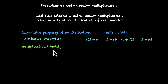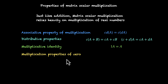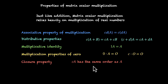Then you have multiplicative identity. This means that we always have a real number — a scalar — which we can use to multiply with a matrix to get the same matrix. In real numbers we have the number 1, and in matrix scalar multiplication we also have this number 1, so 1 times any matrix is the same matrix. Then you have multiplication properties of zero — again, properties, not property, so we have two of them. Either we can have 0 multiplied by a matrix, in which case we get the zero matrix, or we can have any number multiplied by the zero matrix, and we will again get the zero matrix. Then we have the closure property: if you are multiplying a matrix with a scalar, the order does not change — C times A has the same order as A.